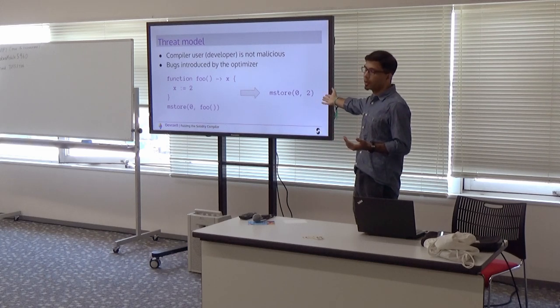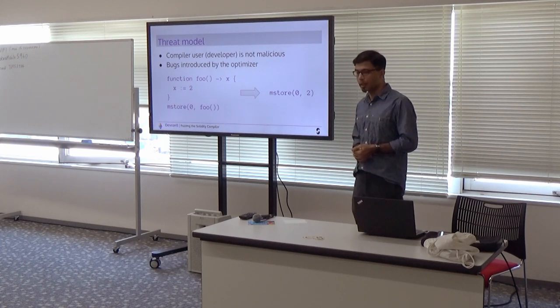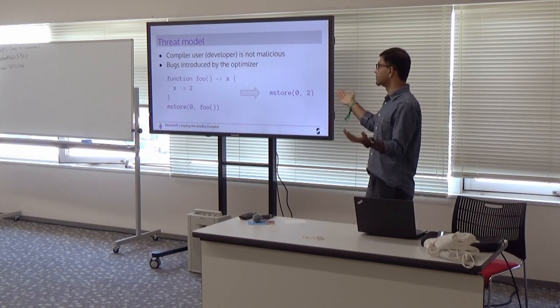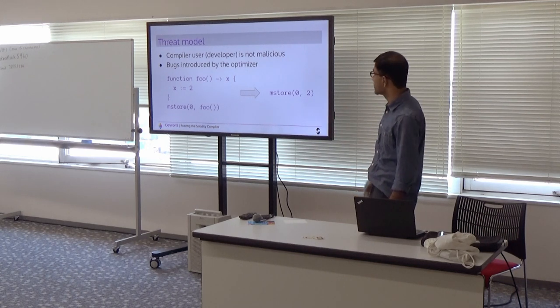And this is what you get on the right hand side after optimization, which is straight and store 0.2. So essentially you want to make sure that it's correct code and the compiler behaves as expected.